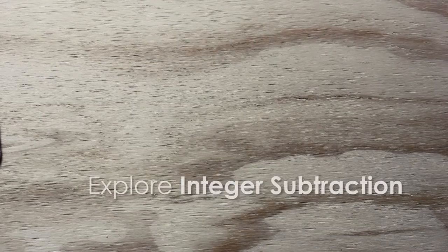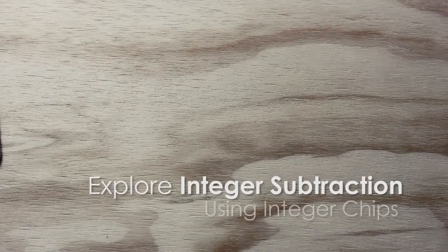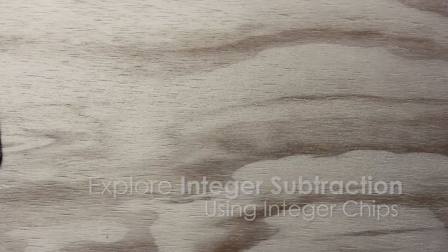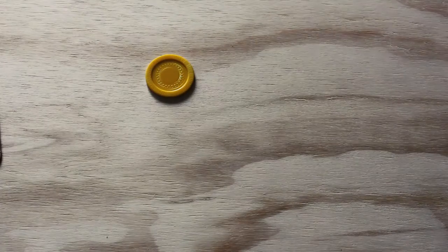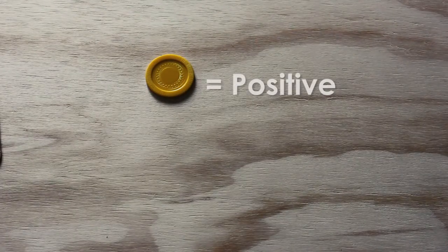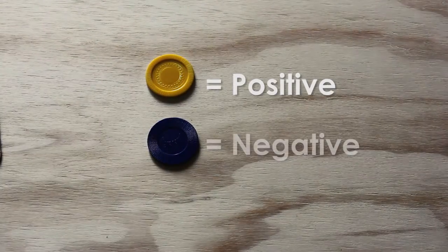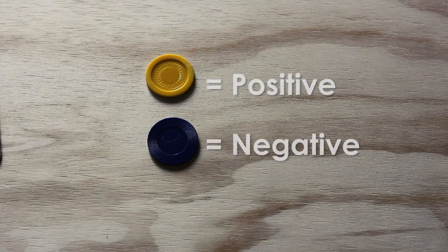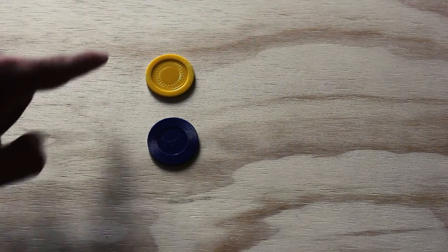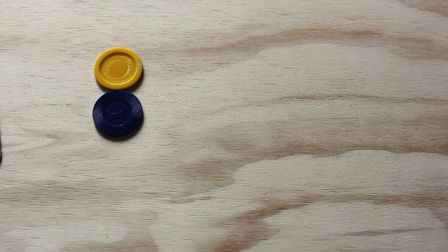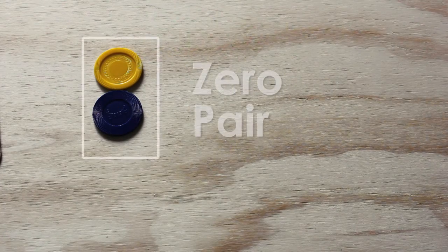Here we are going to explore integer subtraction. Just like in the last video, we're going to use yellow integer chips to represent positives, and we're going to use blue integer chips to represent negatives. And just a quick refresher, these two combined make a zero pair.